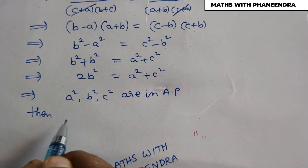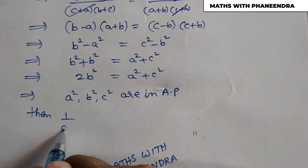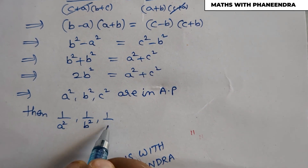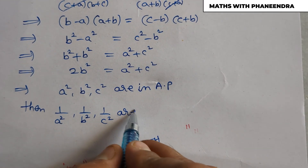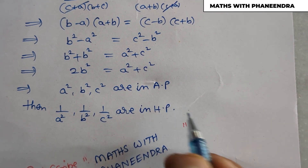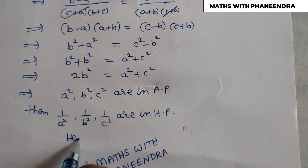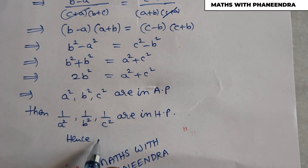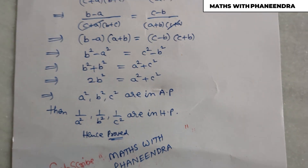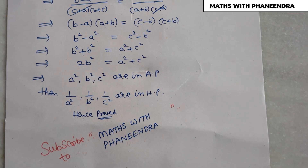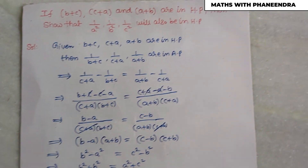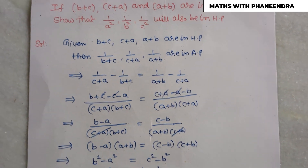Whenever a², b², c² are in arithmetic progression, their reciprocals 1/a², 1/b², 1/c² are in harmonic progression. Hence proved. I hope everyone understands, dear students. Please do subscribe to Maths with Panindra.